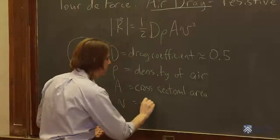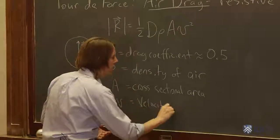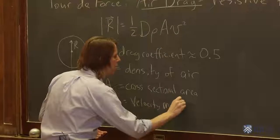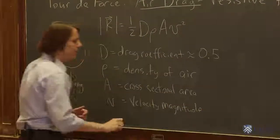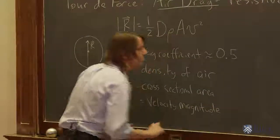And then v is the velocity magnitude, or the speed, and it's squared.